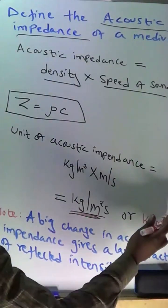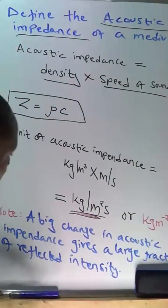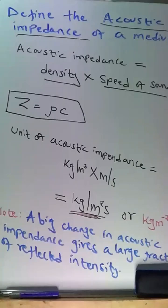Or you can write kilogram meter per negative two seconds per negative, which means kilogram per meter square second.